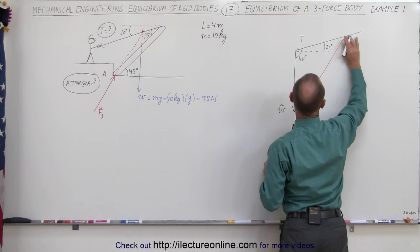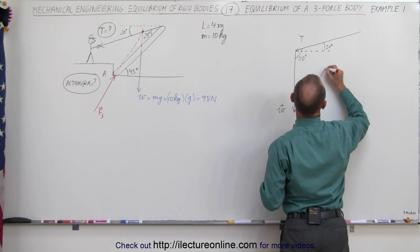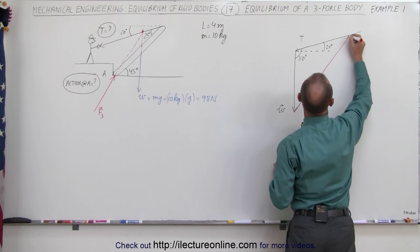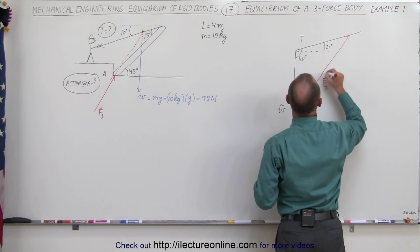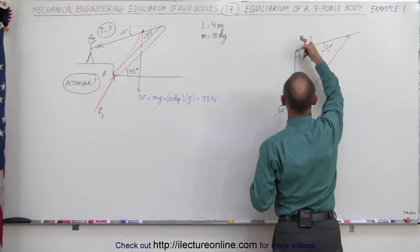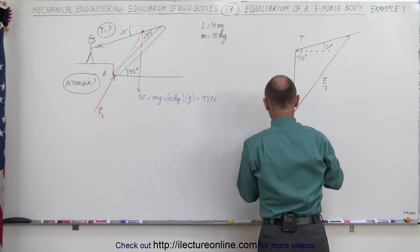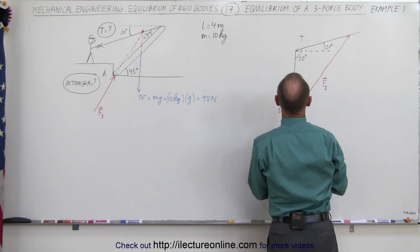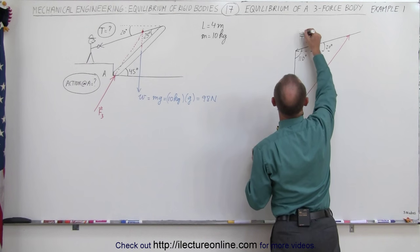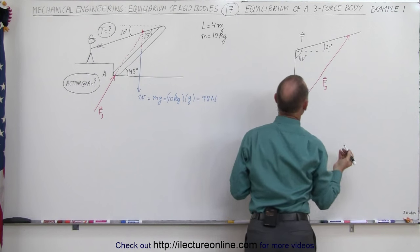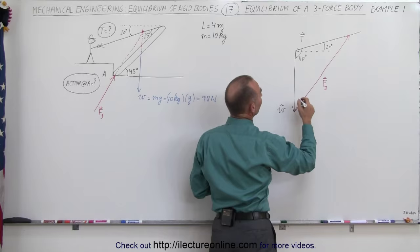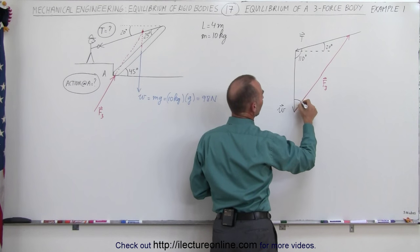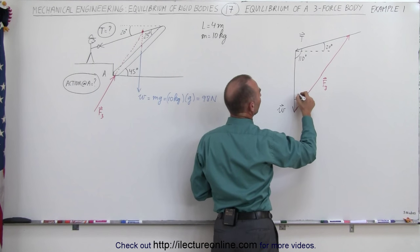Let me redraw that. So there's F3, there's the tension, and there's the weight. The tension is also a vector quantity. What I need to do now is find what this angle is — let's call it theta.